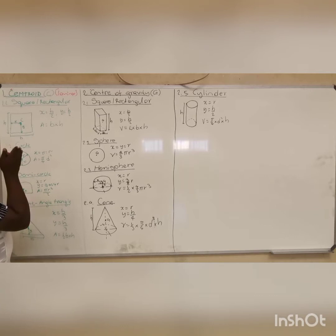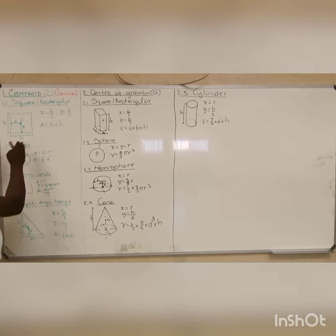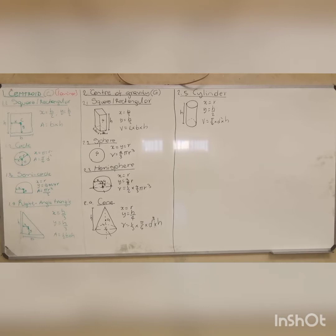Each and every symmetric object has its own centroid and center of gravity. For calculation purposes, you must know each and every shape — you must know where the center of gravity is and where the centroid is. I've set down all the shapes we use for calculations, and I'll show you where the center of gravity is for each. There are four main shapes for which you will determine a centroid: your square and your rectangle.